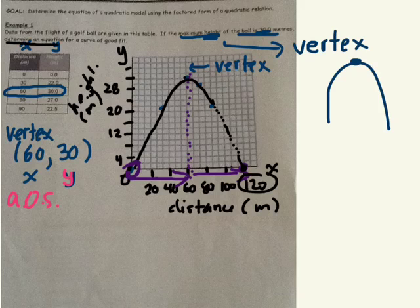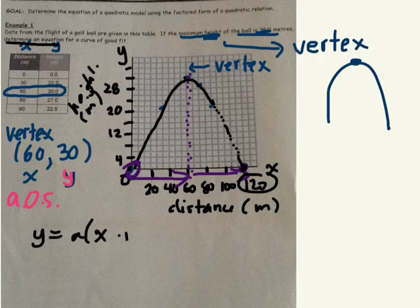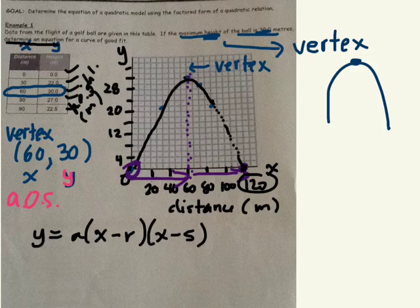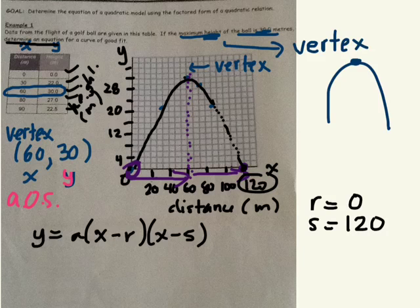You're asked to find an equation for this parabola, for this curve. Well, we know X intercepts. What form should we write it in first? Factored form. We know R and S. Do we know an X and a Y? Do we know any point on this parabola? Yes, we have lots. We have 1, 2, 3, 4, 5. Pick one and plug it in. So we're going to use the X intercepts of 0 and 120. And the point you want to use, your X and Y, you want to use the vertex. So that's fine.